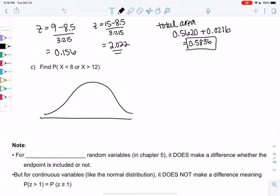Let's try one more. The mean is still 8.5. And then we want to find the area less than 8. Let's do greater than 8 or less than 12.